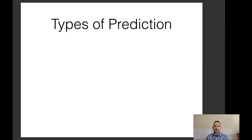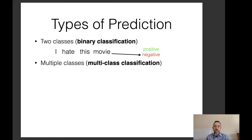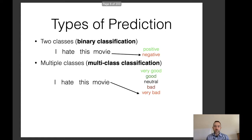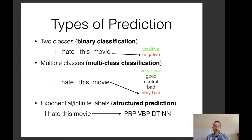As we talked before, there are several types of prediction, such as binary classification, where we make a prediction over two labels; multi-class classification, where we make a prediction over multiple labels; and structured prediction, where we make a prediction over a large number of labels — so large that we can't enumerate all of them — like predicting a part-of-speech sequence or a translation.